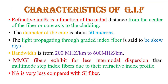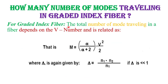Now the characteristics of graded index fiber. The refractive index of the core is not constant — it continuously varies from the center toward the core-cladding interface and is always larger than the refractive index of the cladding. The diameter of a multi-mode graded index fiber is about 50 microns or more. Light propagation in graded index fiber is said to be skew rays. The bandwidth is 200 MHz/km to 600 MHz/km. Multi-mode graded index fiber has less intramodal dispersion than multi-mode step index fiber, and graded index fiber has a smaller numerical aperture compared to step index fiber.